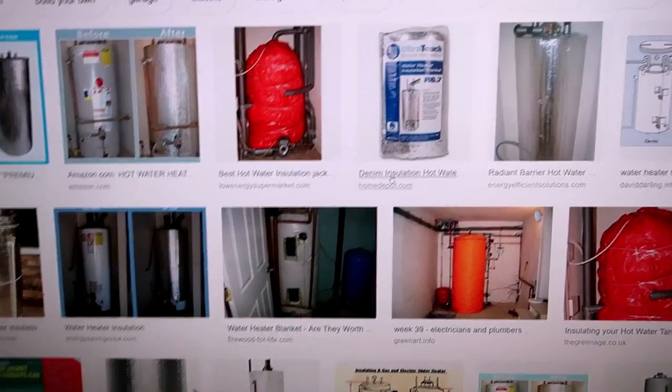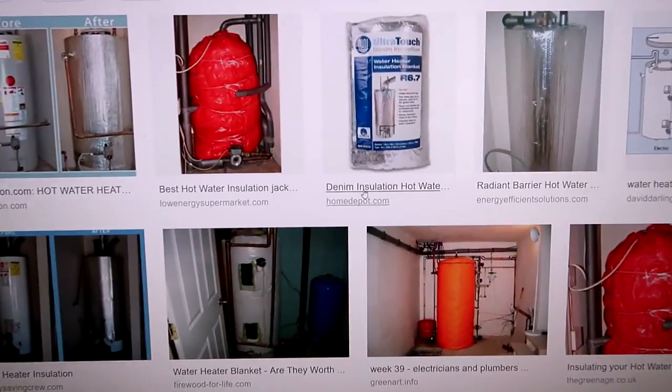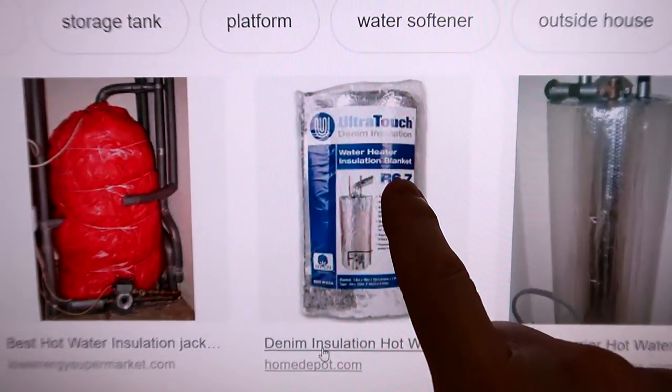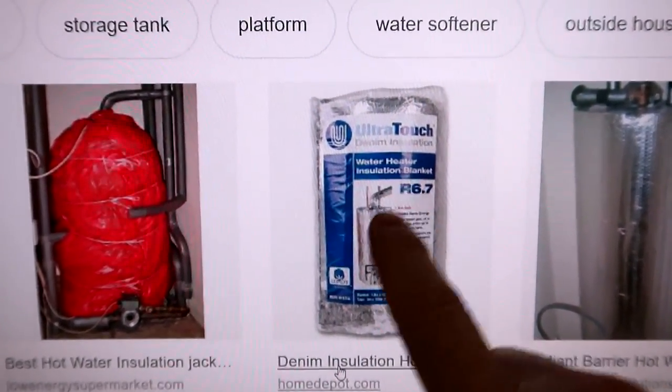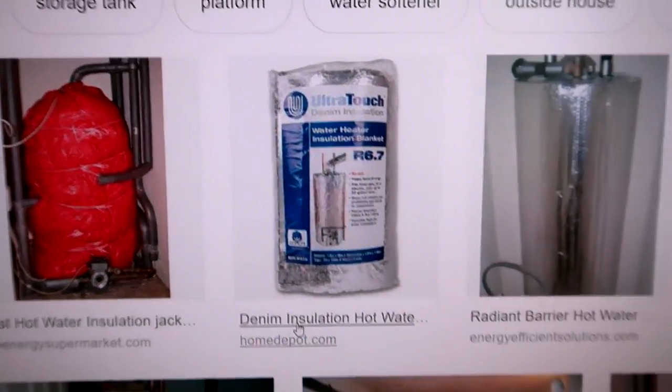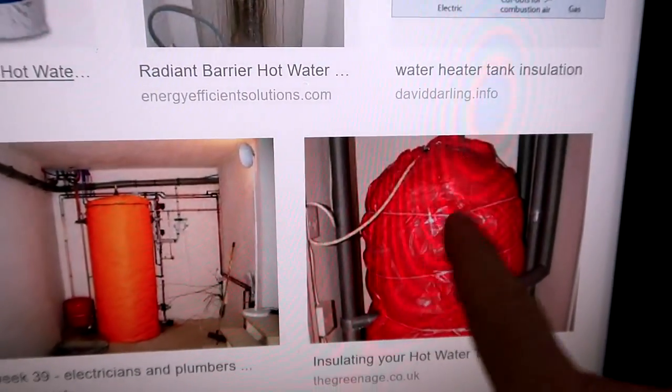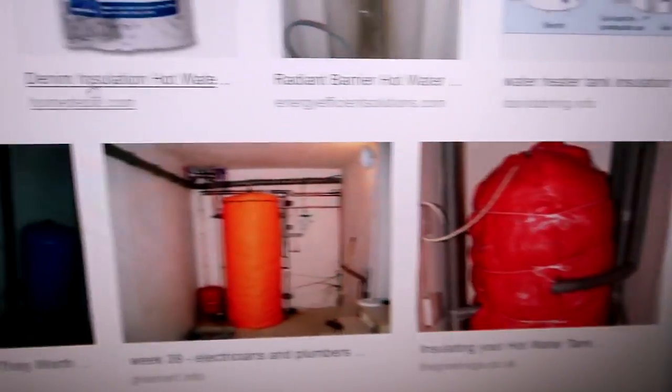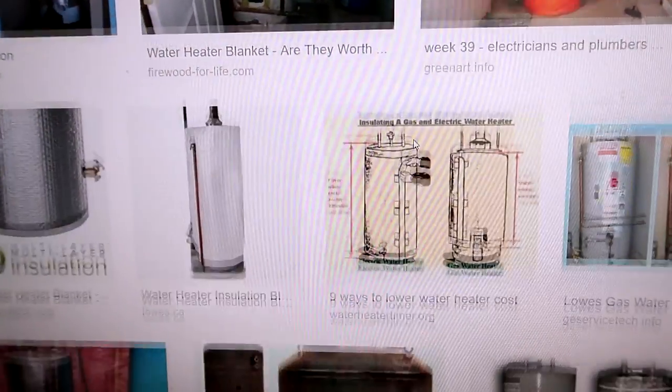I was just searching the web for other information on hot water heater jackets, and there are other ones available. For instance, this one claims to be R6.7 and it looks like it's much thicker, and then you could just wrap insulation around it like this. Just plain old fiberglass insulation.